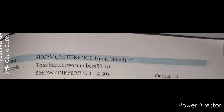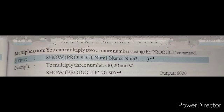Next is the multiplication command. You can multiply two or more numbers using the PRODUCT command. The format is: SHOW (PRODUCT NUMBER1 NUMBER2 NUMBER3), then press Enter. For example, SHOW (PRODUCT 10 20 30) — press Enter and you get the result 6000.